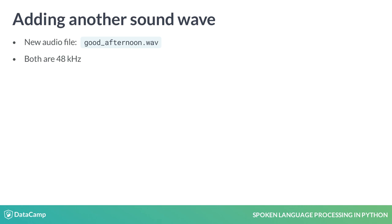In the previous lesson, we used the frame rate to calculate the timestamps of where each piece of audio information appears. Behind the scenes, we've done the same calculations with the good afternoon audio file as the good morning file. Now we've got both sound wave arrays and timestamps ready, we can plot them.